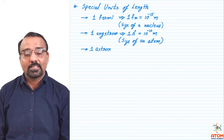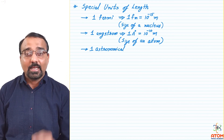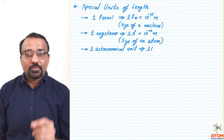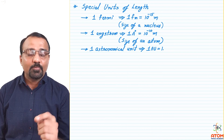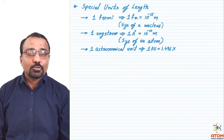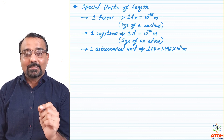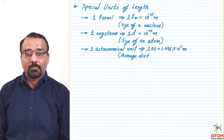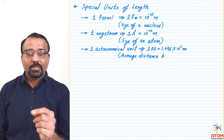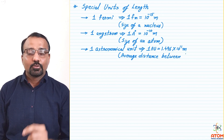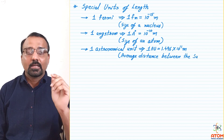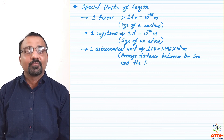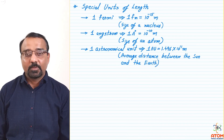Then comes a large unit: 1 astronomical unit, denoted by 1 AU. This astronomical unit has a value of 1.496 into 10 raise to plus 11 meter, which is the average distance between the Sun and Earth. Using this unit, if a star is 10 astronomical units away, we know it is 10 times farther than the Sun is from Earth. That is why this unit is used especially for astronomical purposes.